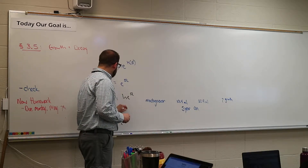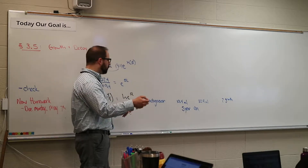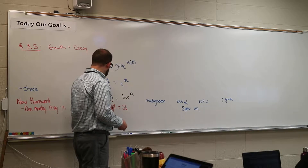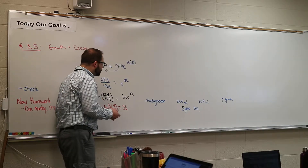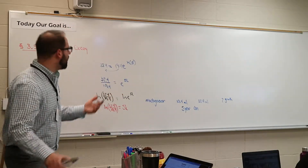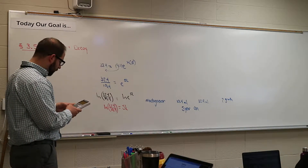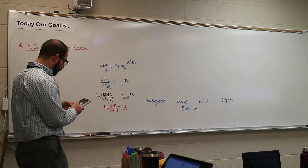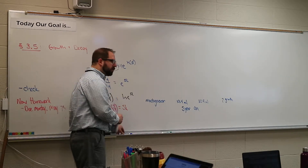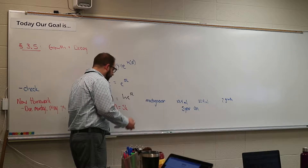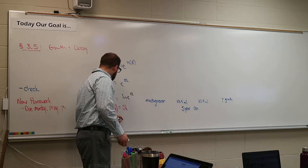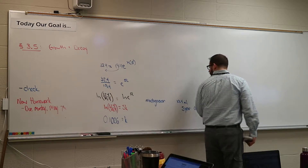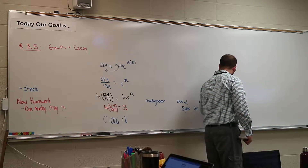When you drop the exponent out front, the natural log of e goes away because it equals 1. So natural log of 32.4 over 19.4, divided by 5, gives you k. Typing it in — natural log of 32.4 divided by 19.4, divided by 5 — we get 0.1026. That's about a 10.2 percent growth rate, which is huge over five years.